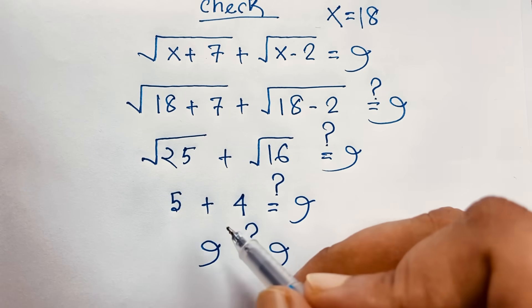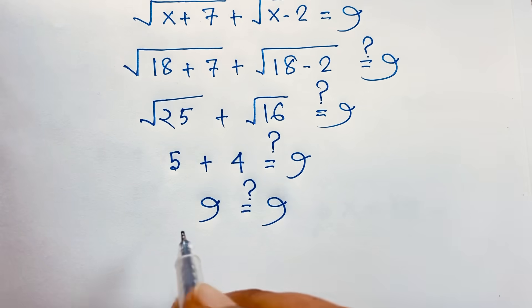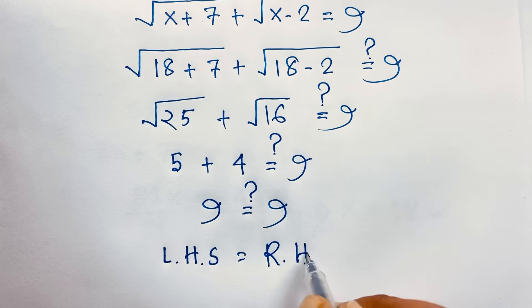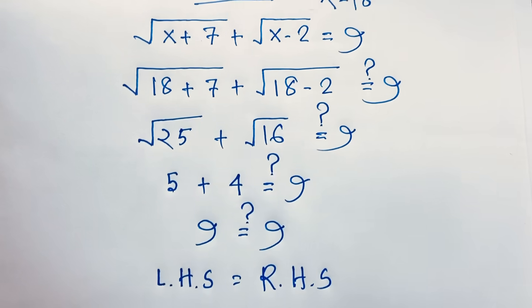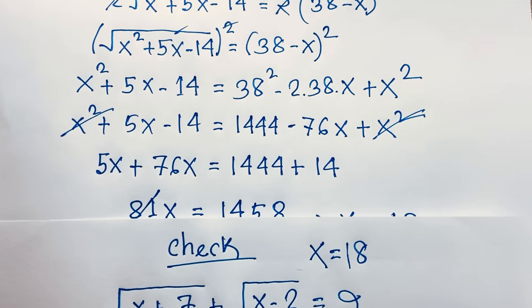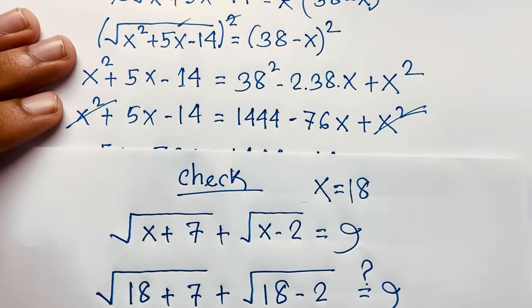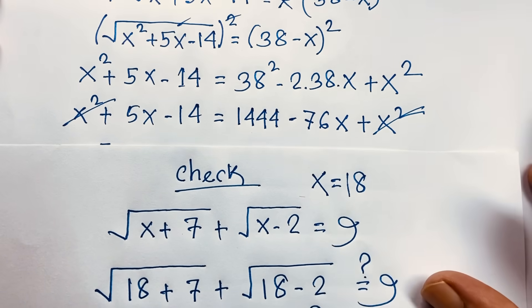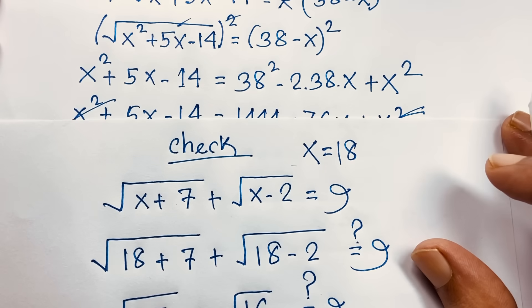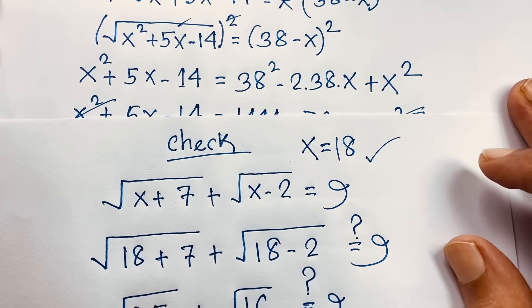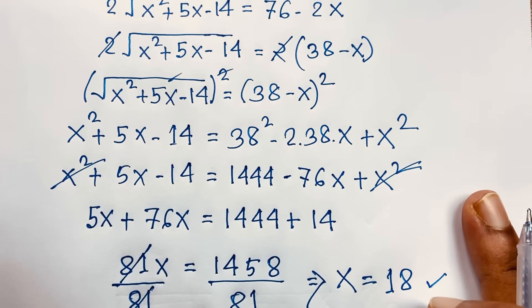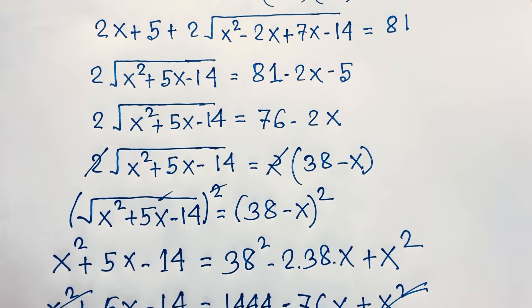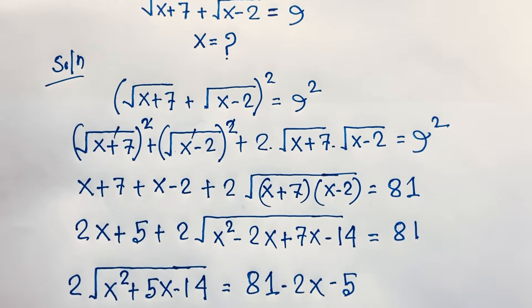So the left-hand side equals the right-hand side. When x equals 18, LHS equals RHS. Our final answer is x equals 18 in this radical math question. This is the value of x. Thank you all. If you enjoyed this radical math question, please subscribe to my channel for other interesting videos. Goodbye, take care everyone.